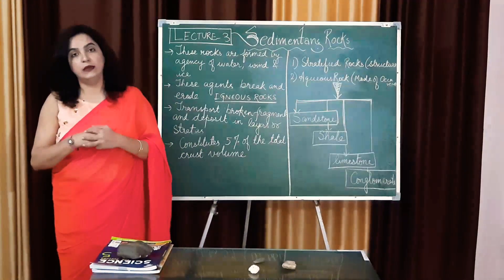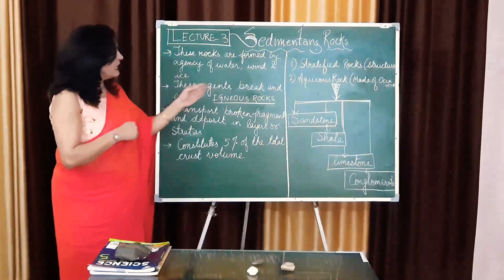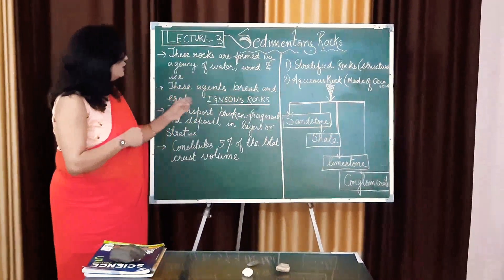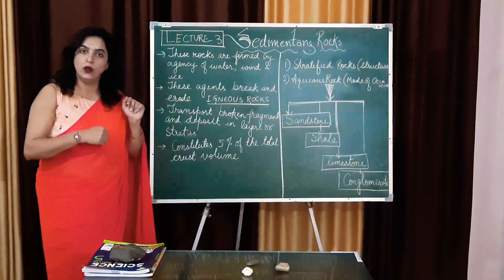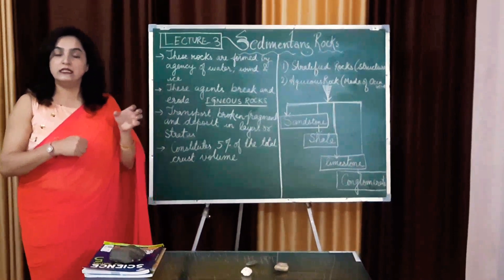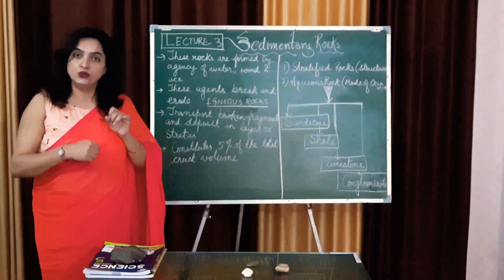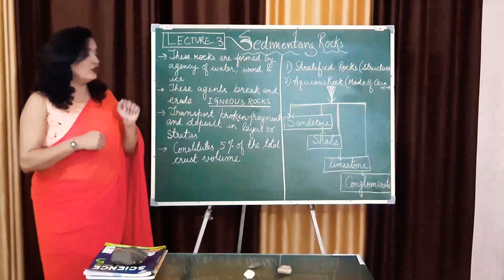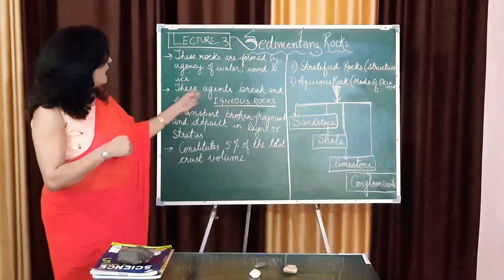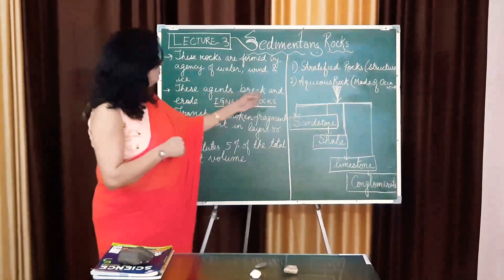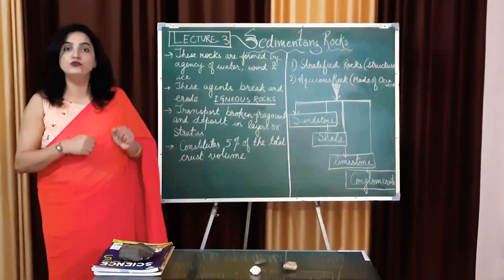Hence we call them sedimentary rocks. The fact is these agents break and erode igneous rocks. In the last lecture, if you can recall, I told you igneous rocks are the basis of all the landforms on the earth. So children, sedimentary rocks are also derived from igneous rocks because these agents break and erode the igneous rocks and make them into small pieces.